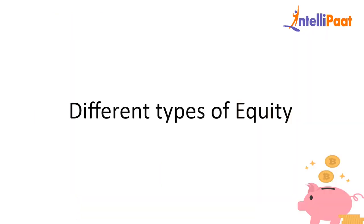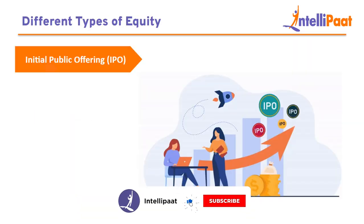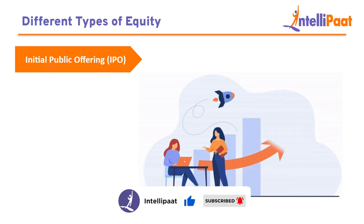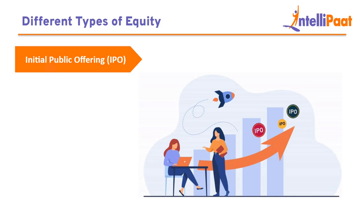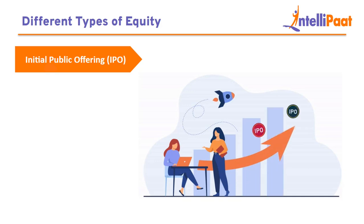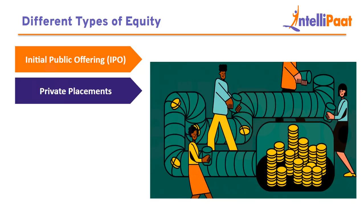Different types of equity. Initial public offering (IPO): an IPO is a procedure by which a privately owned firm first makes its shares available to the general public. By selling shares to investors in return for equity ownership, a firm can raise a lot of money by going public. Private placements: during private placements, businesses sell shares of stock to a select group of private investors, including institutions, venture capitalists, and private equity firms.